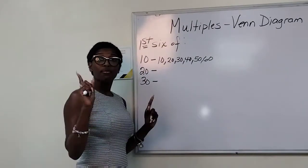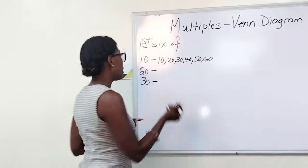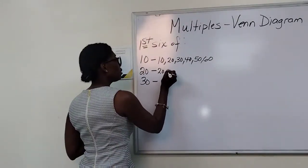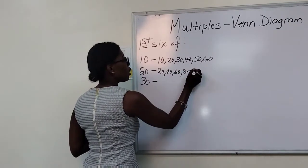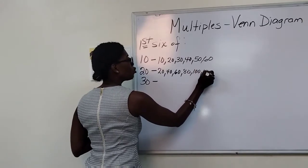First six multiples of 20: 20, 40, 60, 80, 100, 120.